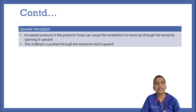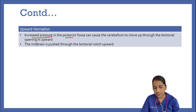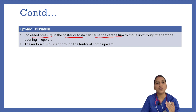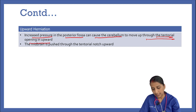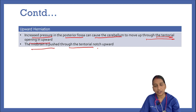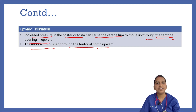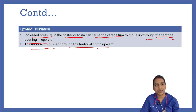Coming to upward herniation. Increased pressure in the posterior fossa can cause the cerebellum to move up through the tentorial opening. The midbrain is pushed through the tentorial notch upwards, and the clinical features are similar to those seen in uncal herniation and central herniation.